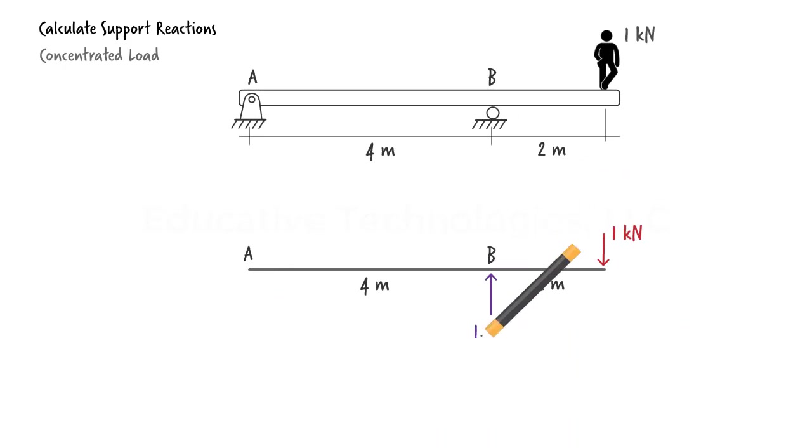So, here are the results, the non-zero support reactions. Since Ay came out negative, we know that the actual direction of the force is the opposite of the assumed direction. So, we flip the force direction and change its magnitude from negative to positive 0.5, meaning the force is acting downward with a magnitude of 0.5 kN.